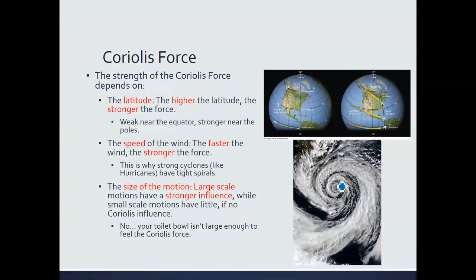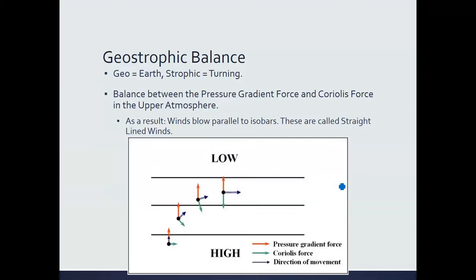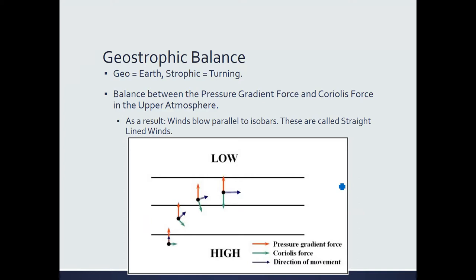The pressure gradient force and the Coriolis force have major impacts on wind. In the upper atmosphere — above 1,000 meters — these are essentially the two net forces that act on a parcel of air. As the pressure gradient force accelerates wind towards low pressure, the wind becomes faster and faster, and as it does, the Coriolis force becomes stronger, continuously turning the wind to the right of its direction.